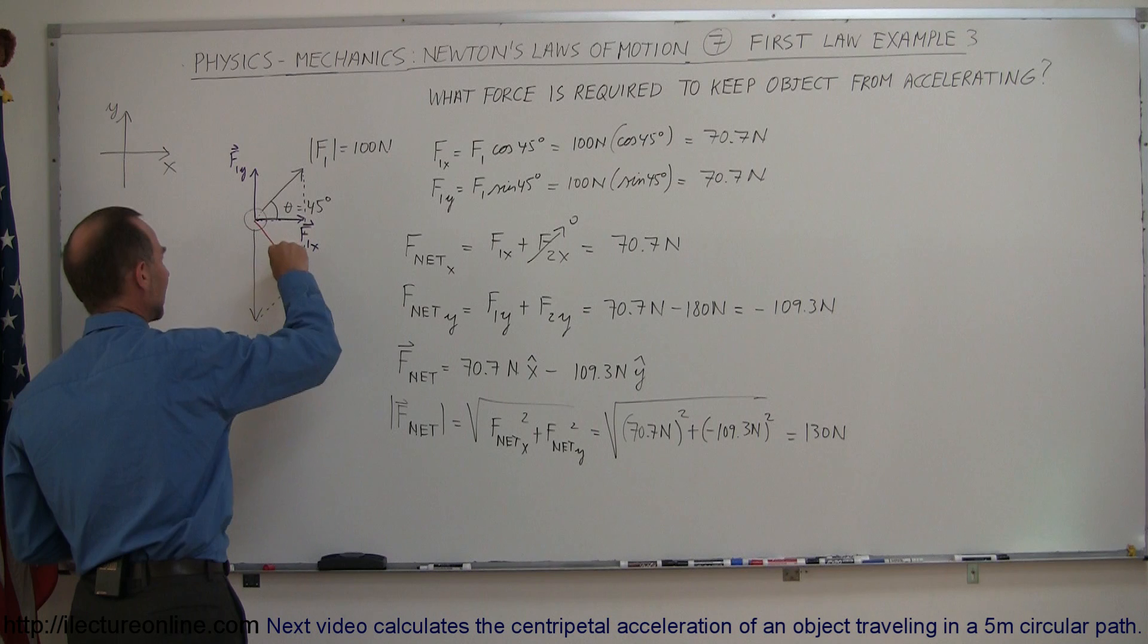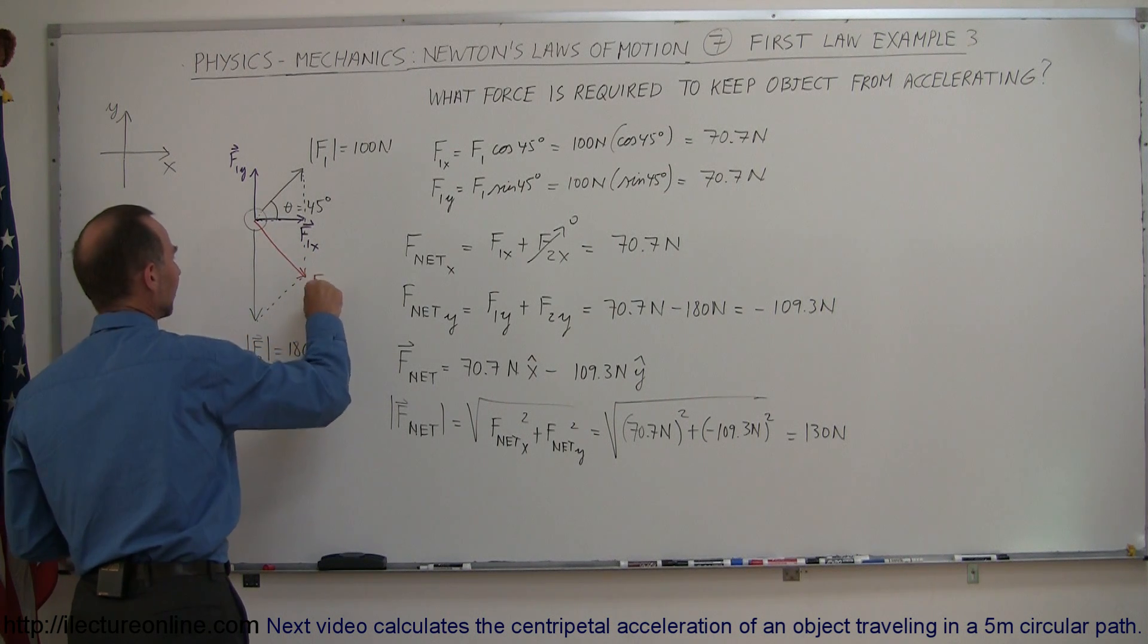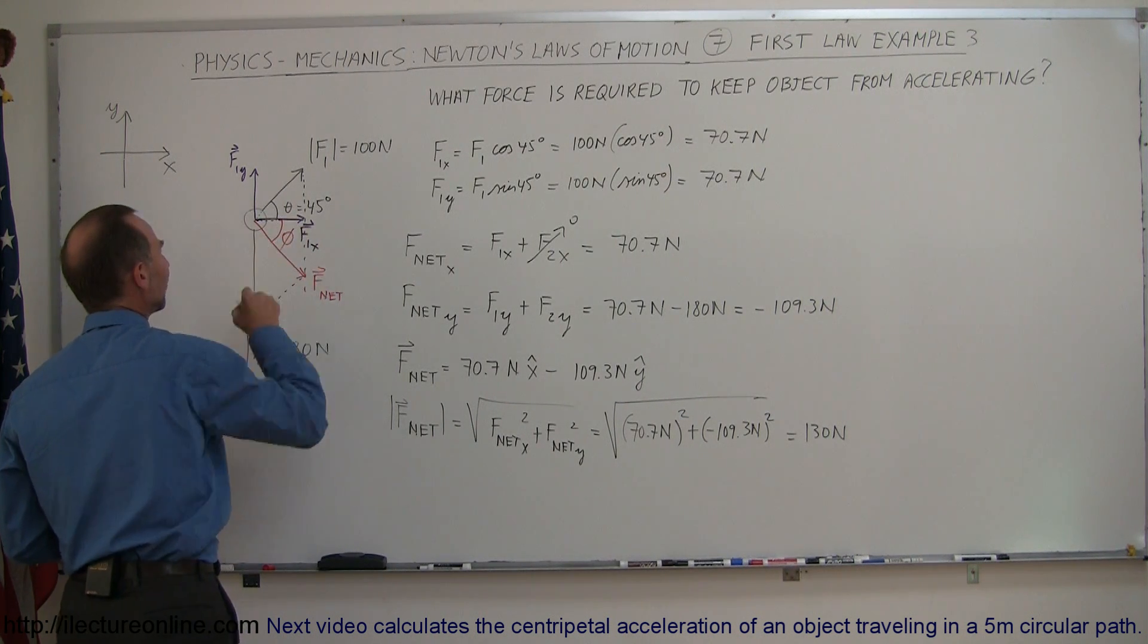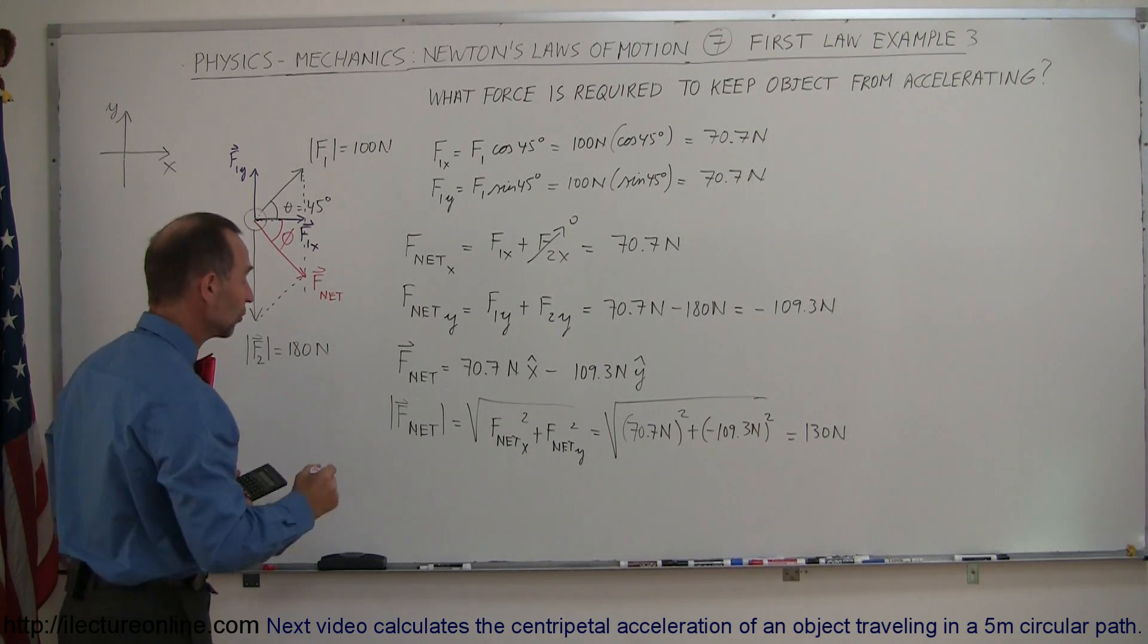So this would be F net like this, F net. If I want to know what this angle is, call it phi. I have to use the arctangent, so let's do that.